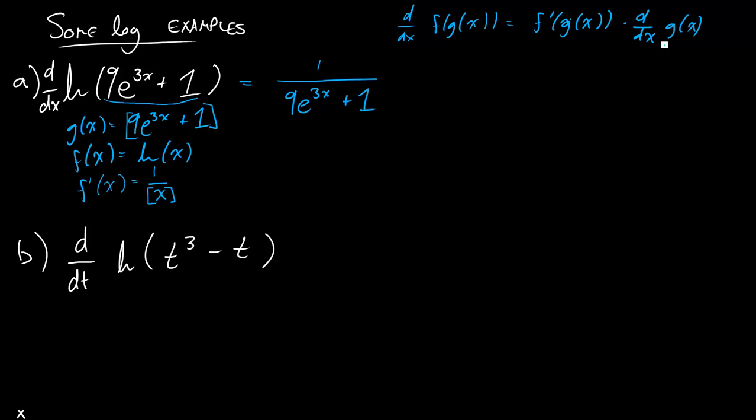The second part of what the formula tells me is that I need to multiply by the derivative of what was on the inside, the 9e to the 3x plus 1. Now, so I'm done taking derivatives here, I still need to take a derivative over here, and what's the derivative of this going to be?